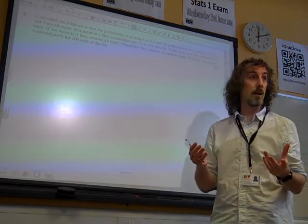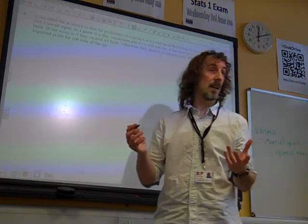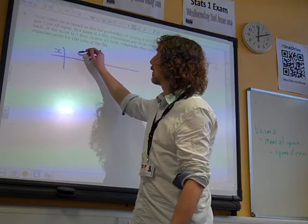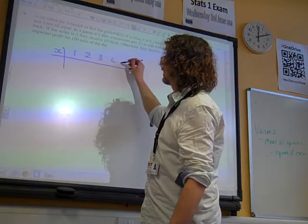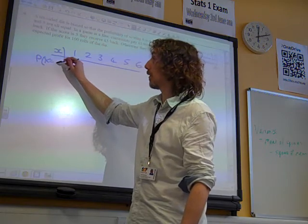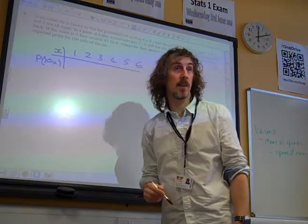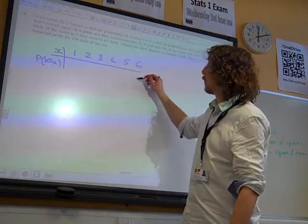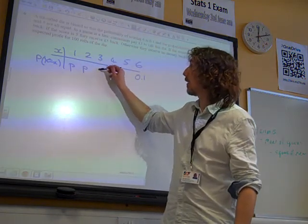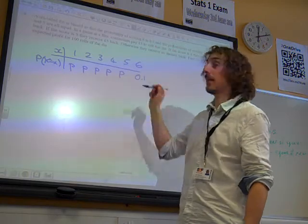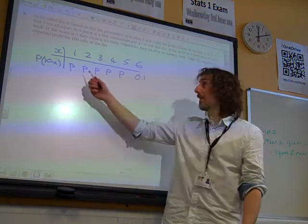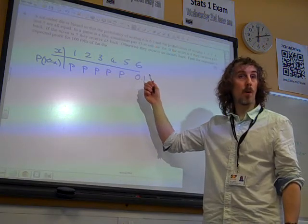we've got the die that can take all the values 1 to 6. So, this is just the score on the die at the moment. And the probability of it taking each value, well, it's 0.1 there. And then all of these have the same probability. And remember what we know about this stuff. We know that the probabilities add up to 1.